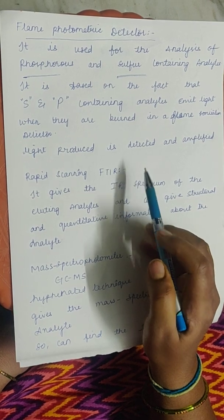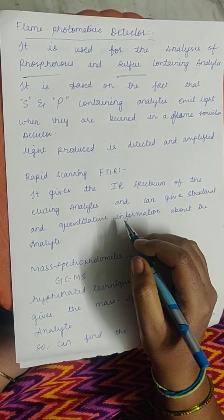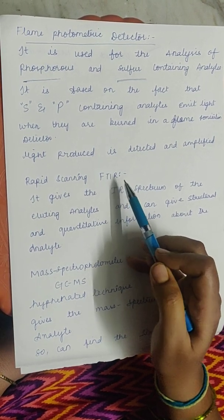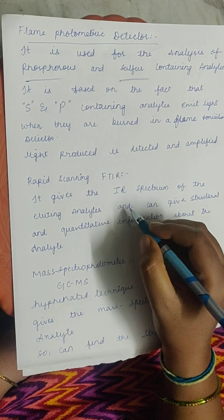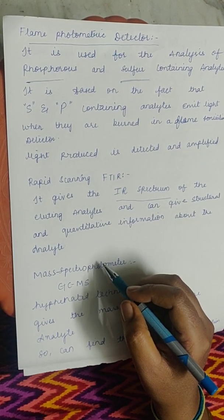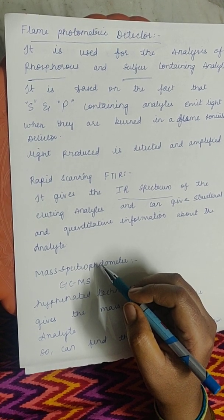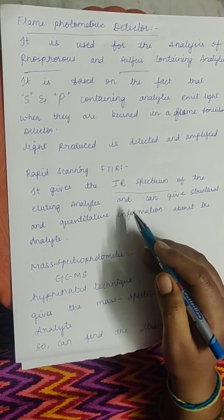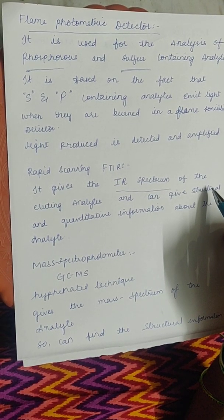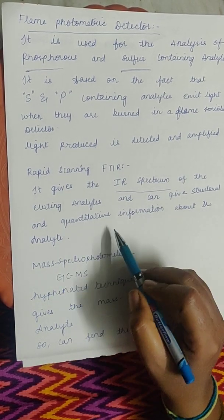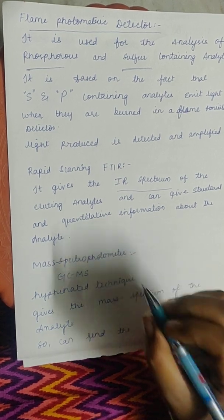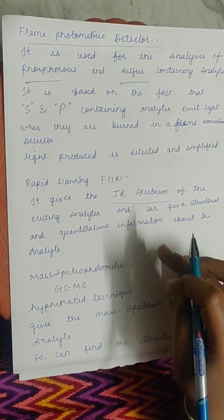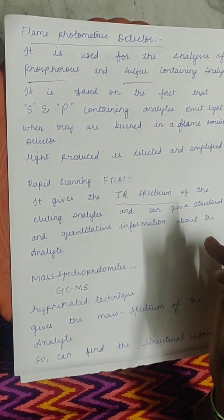The next detector is the rapid scanning Fourier transform infrared spectrophotometer (FTIR). Infrared spectroscopy gives information about the functional groups present in an analyte. The rapid scanning FTIR gives the IR spectrum of the eluates coming out of the column, helping with structural elucidation and providing quantitative information about the analyte. It is very reliable and can detect very minute amounts of sample.